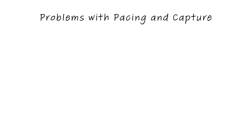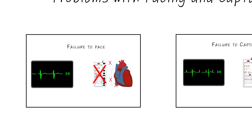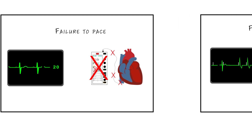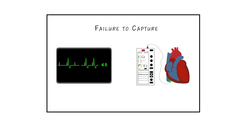First up are problems with pacing and capture, and these can be one of two possibilities: either the pulse generator fails to produce an impulse that reaches the heart — also known as output failure or failure to pace — or the impulses from the pulse generator aren't producing capture of the heart, that is, failure to capture.